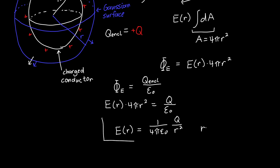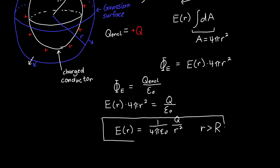This result is for little r greater than the conductor's radius, and you might notice it's exactly the same as the electric field for a point charge. That's because of spherical symmetry — just like we can treat the Earth as a point mass when considering the Moon or satellites, we can treat conducting spheres as point charges outside their surface, which makes our calculations much easier.